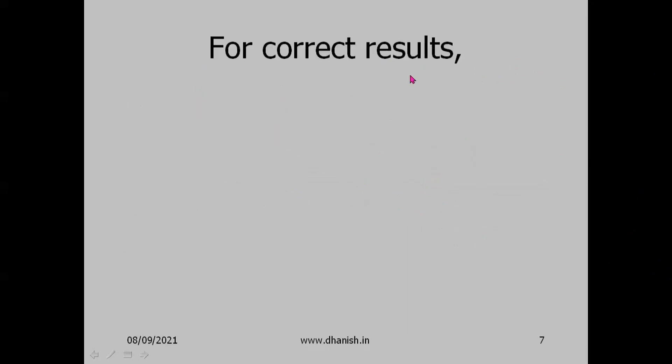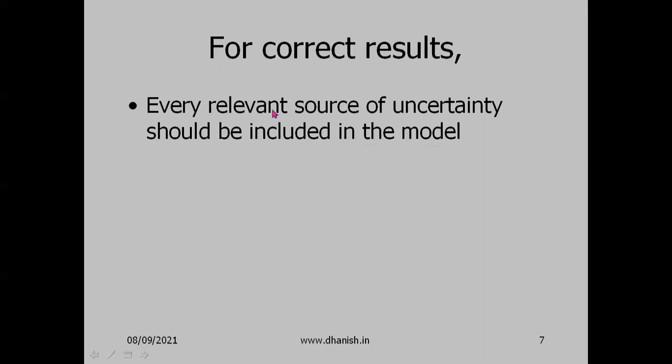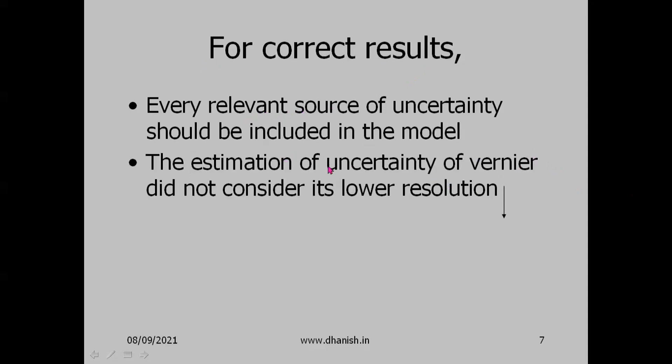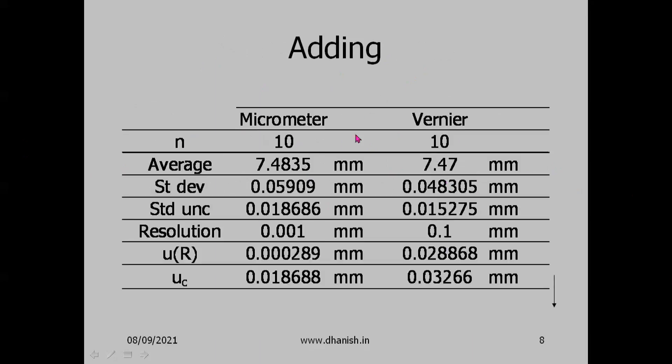For correct results, every relevant source of uncertainty should be included in the model. The estimation of uncertainty of vernier did not consider its lower resolution - the repeated readings, because the resolution is low, it is getting hidden by that. So suppose you add that source of uncertainty.